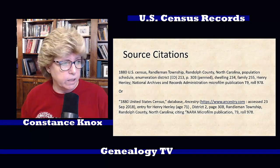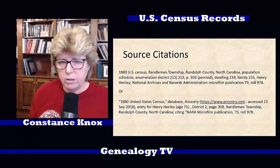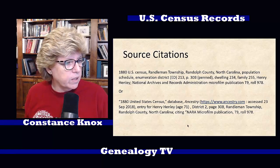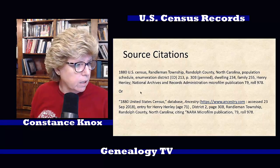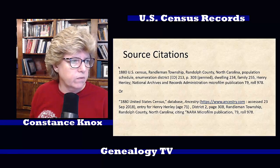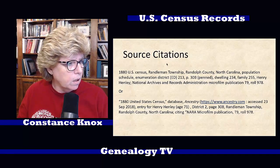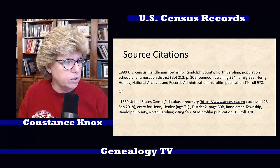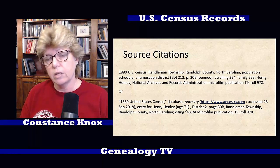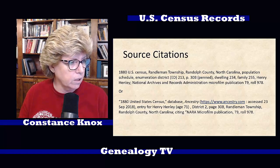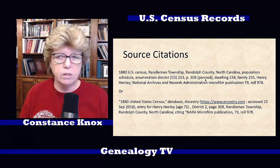There are a couple of ways you can write down sources. I've been trained to do source citations from Elizabeth Schoen Mills — I'll talk about that more in a minute. Here are a couple of different ways you can write a source citation for that census record. This top one would be if you were viewing it on microfilm at one of the archives. It says: 1880 U.S. Census, Randleman Township, Randolph County, North Carolina — population schedule, which is important to note because it could have been a slave schedule or an agricultural schedule. The enumeration district was 213, page 30B, handwritten on the top of the page.